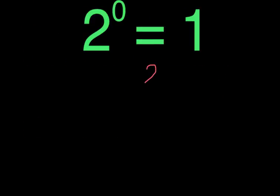This is because of two things. Any non-zero number divided by itself is equal to 1. So if we take 2 to the second power and divide it by 2 to the second power, we get 1. And then when we divide similar bases that have exponents, we subtract the exponents.